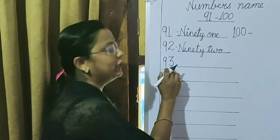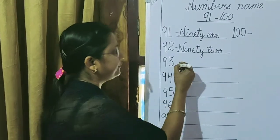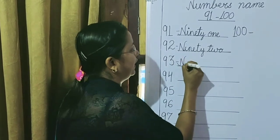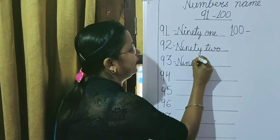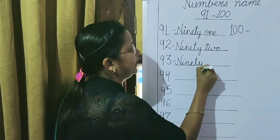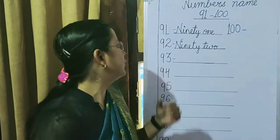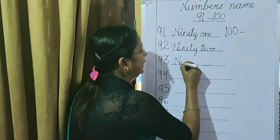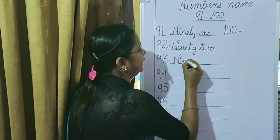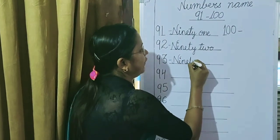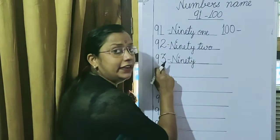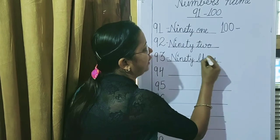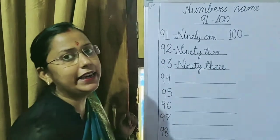Next, 93. N-I-N-E-T-Y for 90. Then, 3 — spelling of 3 is T-H-R-E-E. So that is 93.